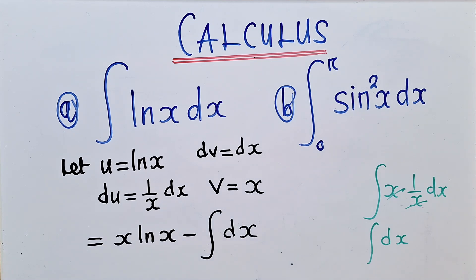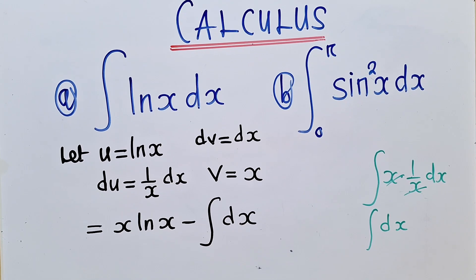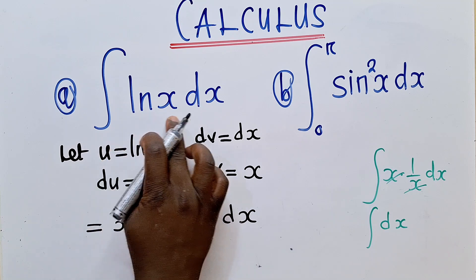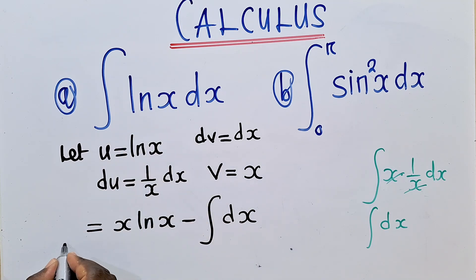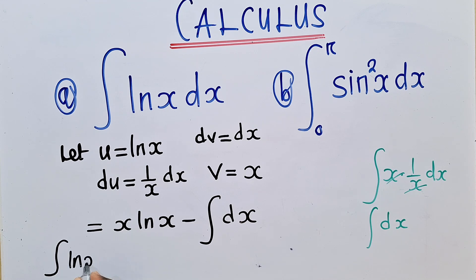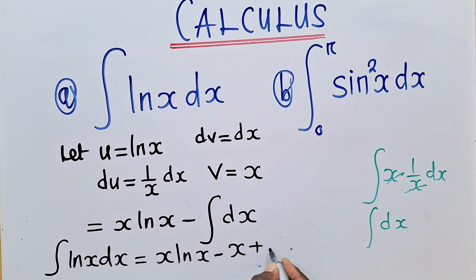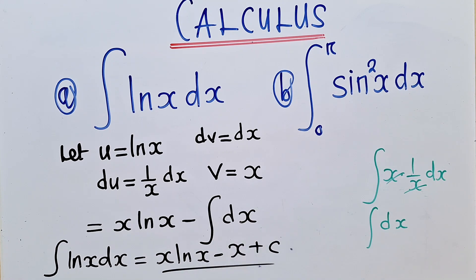And finally, from this stage, we can say the integral of ln x with respect to x is equal to x·ln x minus — what is the integral of 1? That is x — plus c. So this is our answer for the first question.